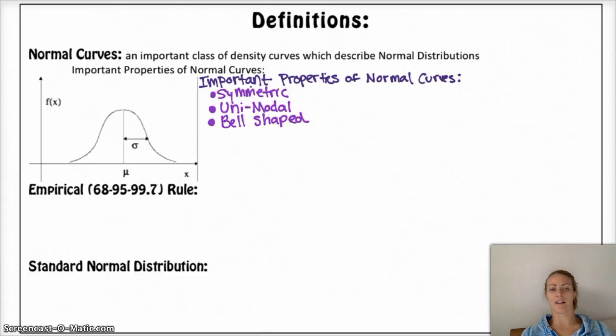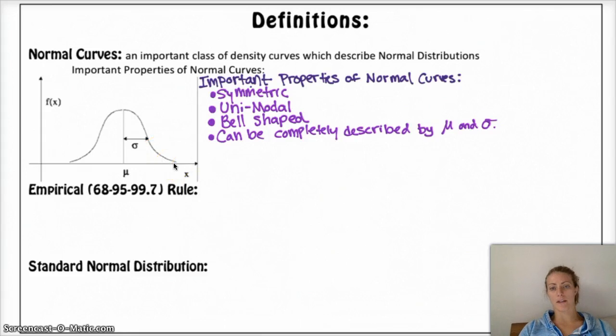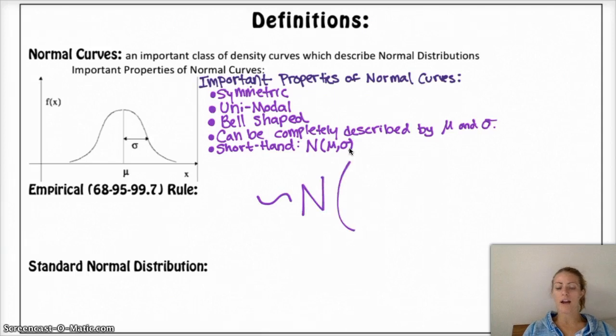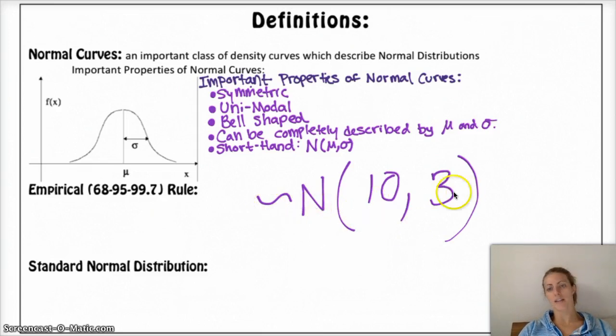Other things that are not as obvious from the diagram is that any normal curve can be described solely by the mean and the standard deviation, and if you have those two things, you know what the curve looks like. If you know the mean and you know the standard deviation, and you know that it's normal, then you know everything about the curve. Shorthand, it can be written as N, and then parentheses with the mean and standard deviation, so if I have an approximately normal curve, I would write approximately normal, and maybe the mean is 10, and the standard deviation is 3.